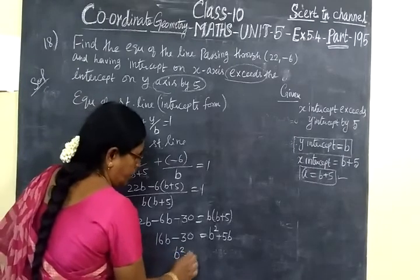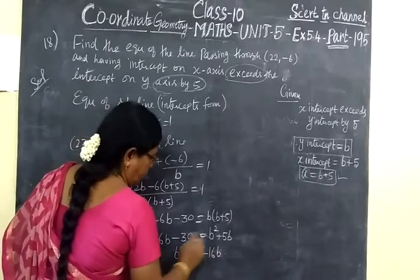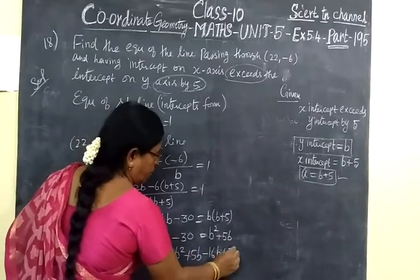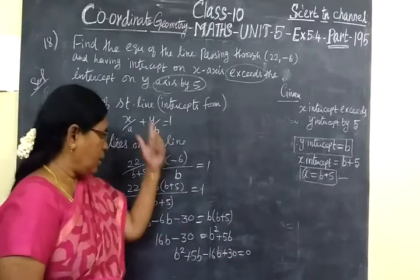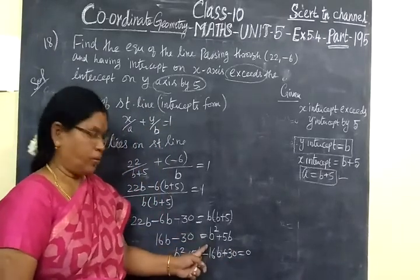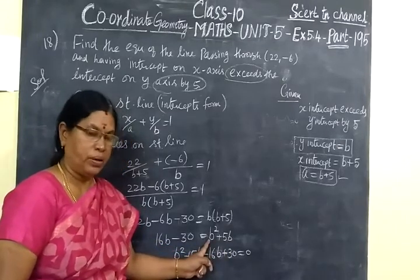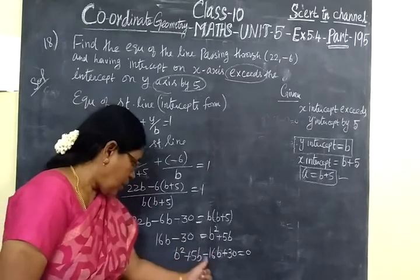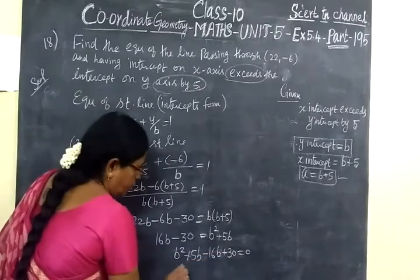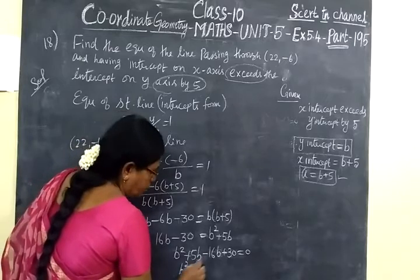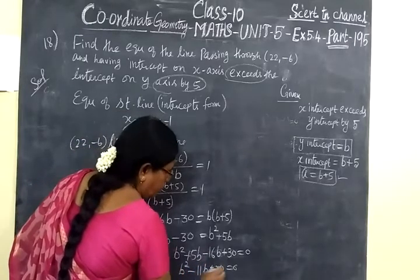B squared should be positive. Simplifying, we get B squared minus 11B plus 30 equals 0.